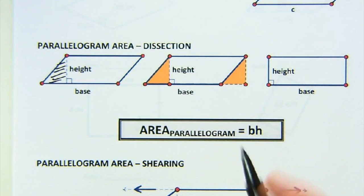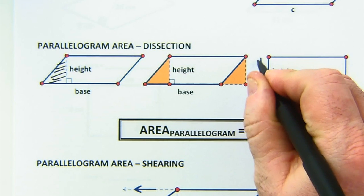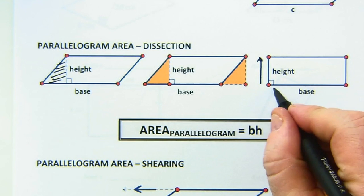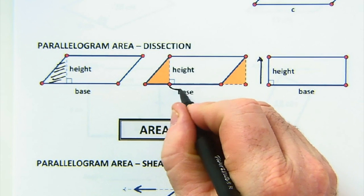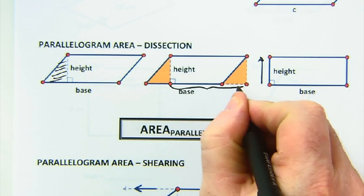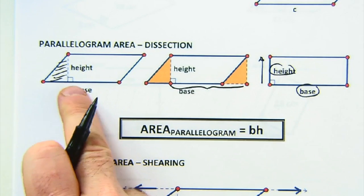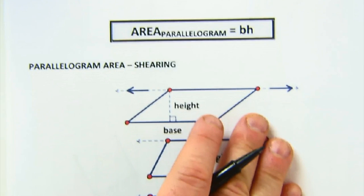And this rectangle, amazingly enough, has the same height as the original parallelogram. And it has the same base as the original parallelogram because the piece we cut off, we just put right back where it went. So we learn that even though it's a parallelogram, it is still just simply base times height. And with a little bit of moving things around, we can easily show that or demonstrate that to somebody.